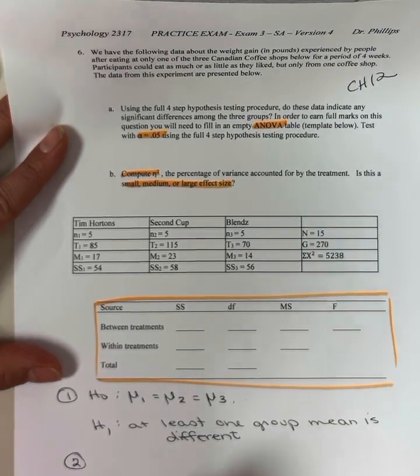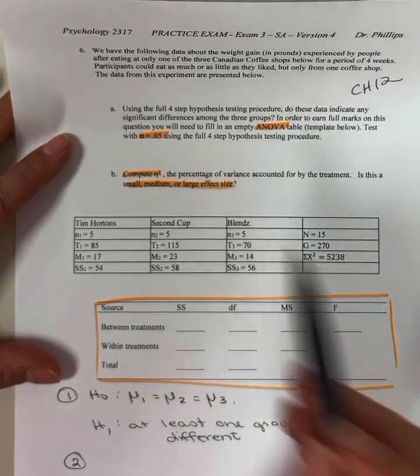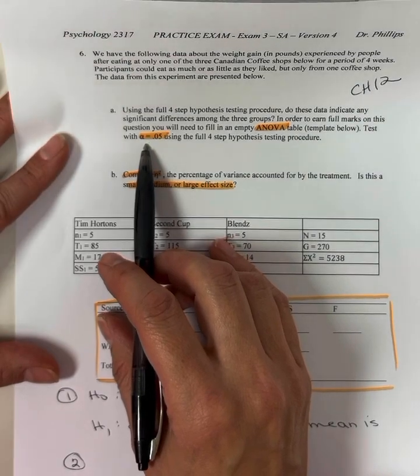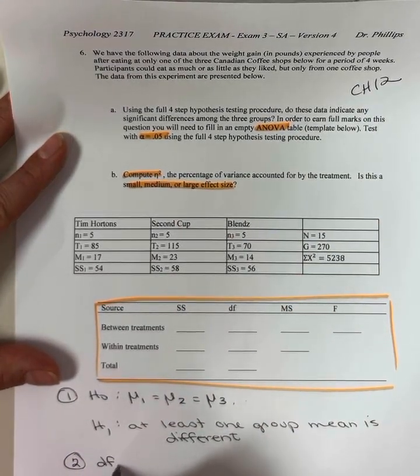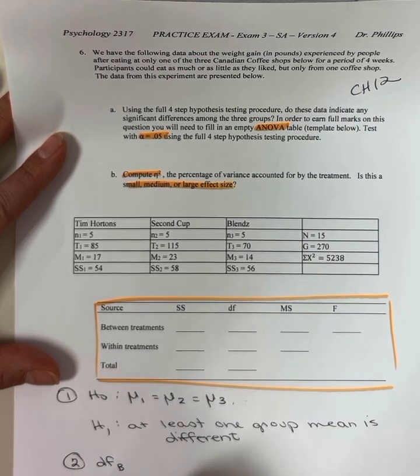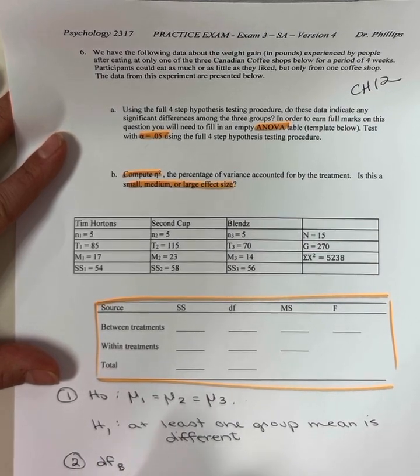Step two, we need to calculate our critical values. We have that it's an alpha of 0.05. That's part of what we need. We need our degrees of freedom between and we need our degrees of freedom within.